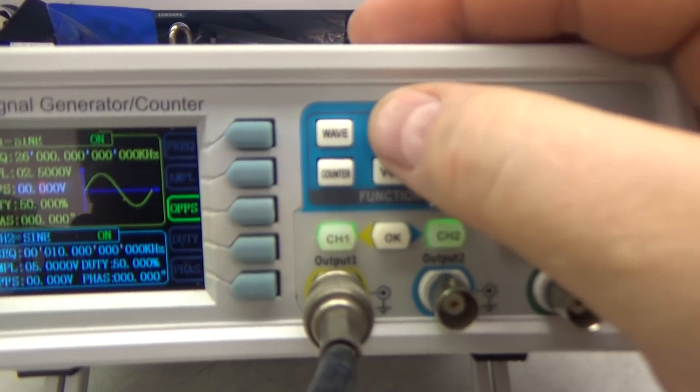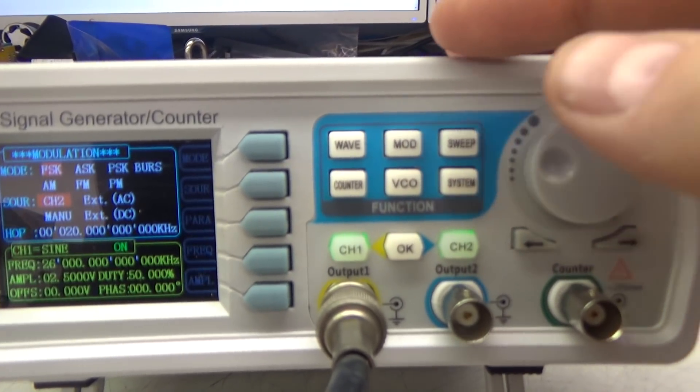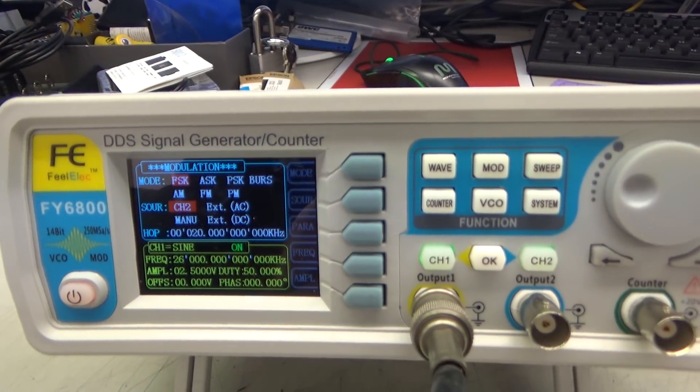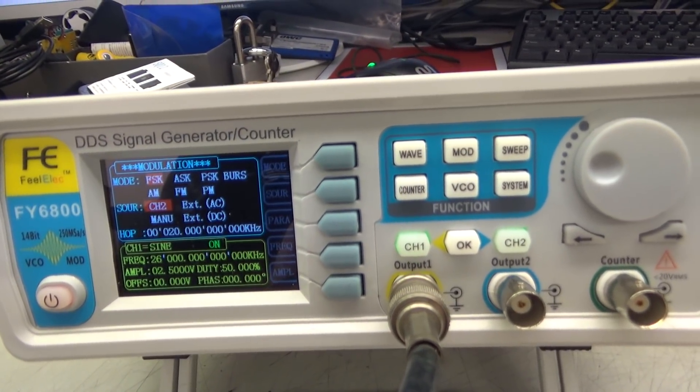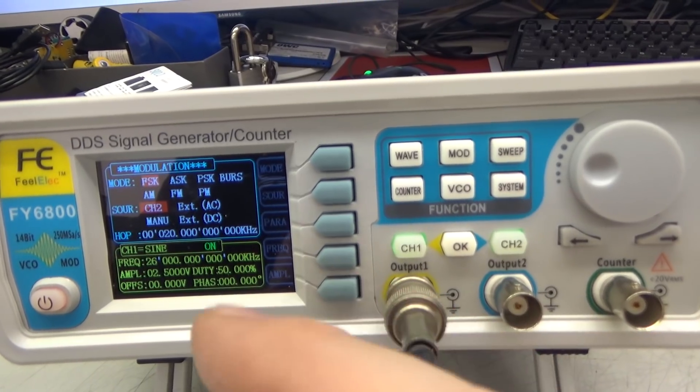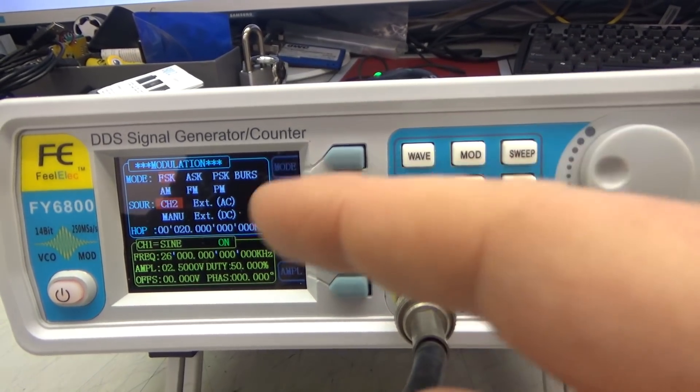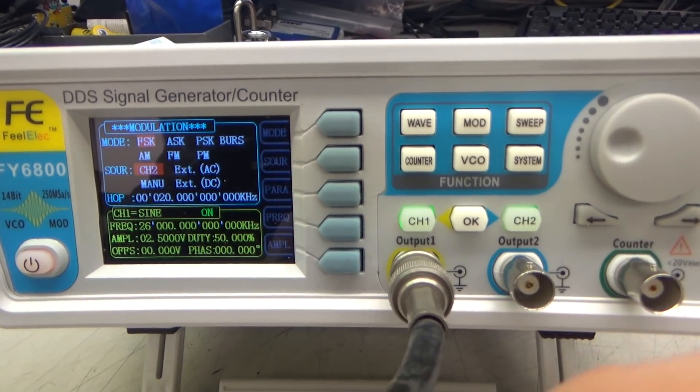Next up we can go to modulated waveforms. So you have frequency shift keying, amplitude shift keying, phase shift keying, burst, AM, FM and phase modulation. And you can either use external AC or external source completely. External source AC coupled, DC coupled, or channel 2.